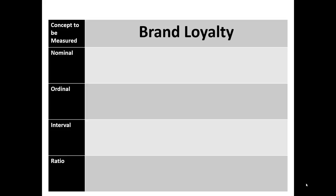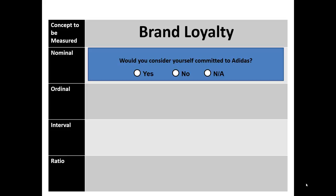It's noteworthy that none of these individual measures are perfect, contingent on the previous definition, but I'd like to illustrate that we can often measure subjective properties at different measurement levels. First, would you consider yourself committed to Adidas? One part of the definition of brand loyalty was commitment to the brand, so we could merely ask them — are they committed? Yes, no, NA. Again, these are just categorical answers, so this would be nominal level data.